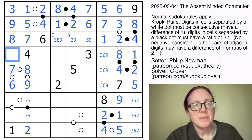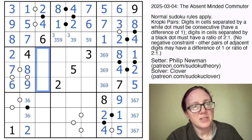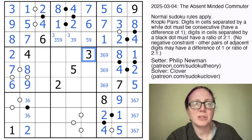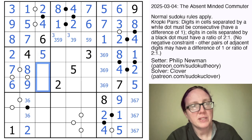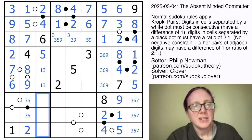There's going to be a 2 to finish off this region. This region, that digit's going to have to be a 2 because 2 can't go in any of those cells, so this is now a 1, 3, 5 to finish the region. There's a 1 and 3 in this row now, so that's a 5. That's a 1, 3 pair.